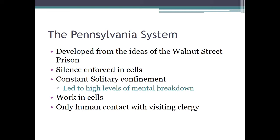The Pennsylvania system that developed out of the Walnut Street system still enforced solitary confinement. There was a little more work and more contact, but solitary confinement led to significant mental illness. Even though society at the time didn't understand mental illness very well, they could recognize where it was coming from — it was pretty clearly being generated by this policy of incarceration. The Pennsylvania system, really the first broad American system, was experimented with from roughly 1780 to the early 1800s. Most of these systems are named after the state or city where the pilot prison was located.